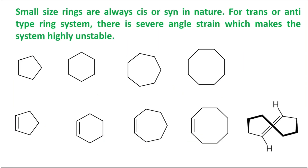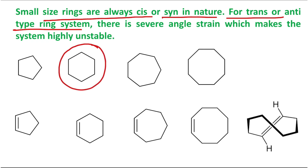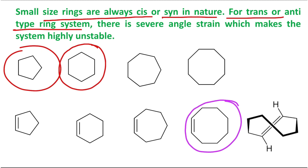Please remember that ring compounds, especially small rings, are always cis in nature. For trans or anti-type ring systems there is severe angle strain, which cannot be handled by small rings like five- or six-membered rings. Larger rings like cyclooctane can be trans, but trans is relatively higher in energy and therefore less stable. Please keep this information in mind as it may appear in your exam.